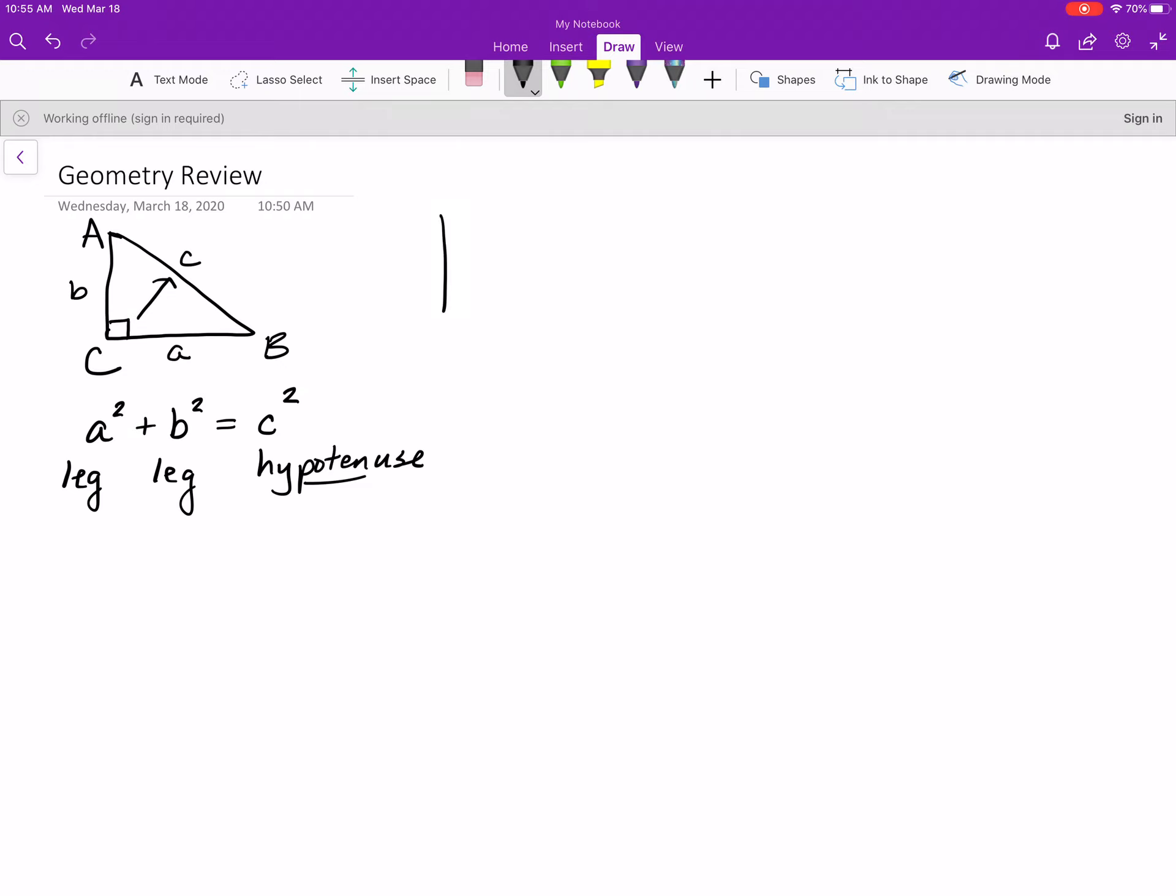Another thing you might remember about triangles, and this is true for all triangles, not just right triangles, but the sum of the angles of the triangle add up to 180. So angle B plus angle A plus angle C equals 180 degrees. So again, let's label these A, B, and C.